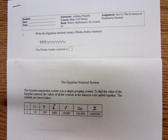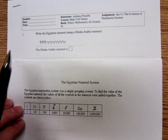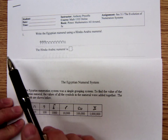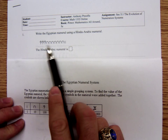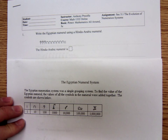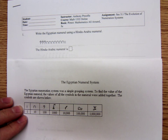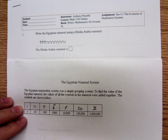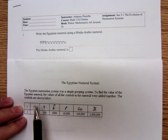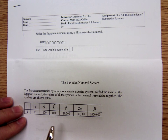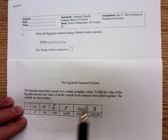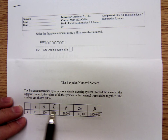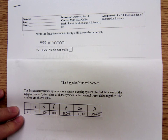We start off by working with the Egyptian numeral system. Problem number one says write this Egyptian numeral using a Hindu-Arabic numeral. The Hindu-Arabic numerals are the ones that we use today. The Egyptian numeration system was just a simple grouping and you just add it together. You look at the chart to find the value and add them together.